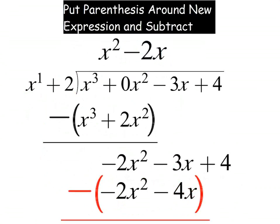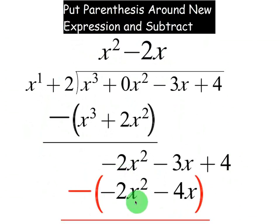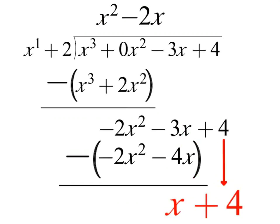Subtracting: negative 2x squared minus negative 2x squared gives plus — they cancel. Then negative 3x minus negative 4x is positive x, because it's negative 3 plus 4. The 4 carries down. So the first two terms always cancel because of double negatives, negative 3 plus 4 is 1, and the answer left is x plus 4.